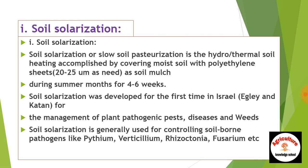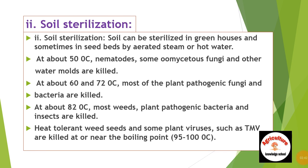Soil sterilization: Soil can be sterilized in greenhouses and sometimes in seed beds by aerated steam or hot water. At about 50 degrees Celsius, nematodes, some oomycetes, fungi, and other water molds are killed. At about 60 to 72 degrees Celsius, most plant pathogenic fungi and bacteria are killed.